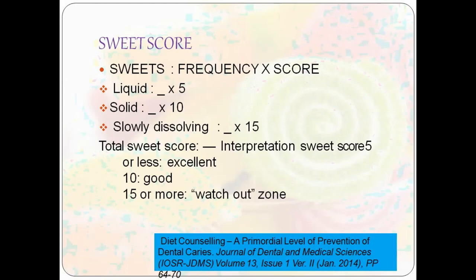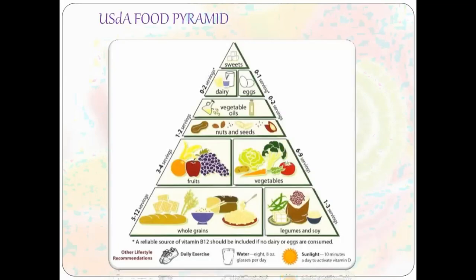The food pyramid shows that sweets at the top should have the least consumption, while the base — comprising vegetables, nuts, seeds, dairy, and eggs — should form the maximum consumption. As we move up the pyramid: the base has more vitamins and nutrients, the middle has more proteins, and the top has more carbohydrates and fatty acids. Sunlight, water, and exercise are also part of this concept.